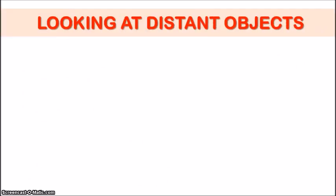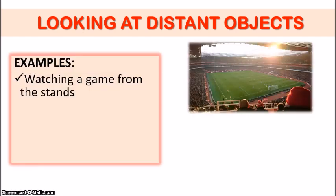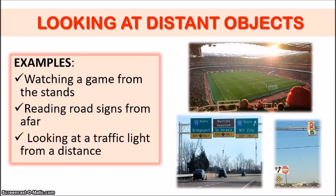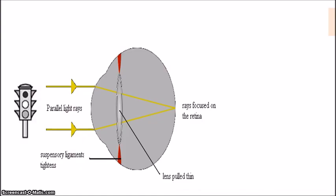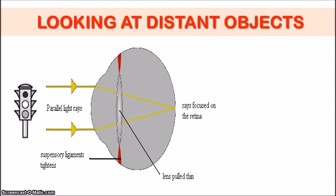Now let's look at what's happening when you're looking at distant objects — for instance, if you're watching a game from the stands, reading road signs from afar, or looking at a traffic light from a distance. So what exactly happens in the eye looking at distant objects? It's going to be quite the opposite of looking at nearby objects. In this case, the traffic light is the object at a distance from the eye, so the light rays coming from it would appear more parallel. And because they're more parallel as they enter the eye, they do not require as much refraction.